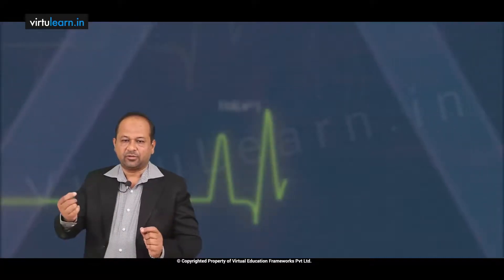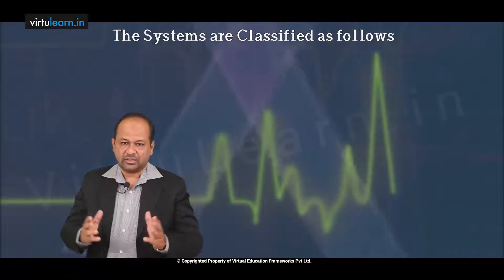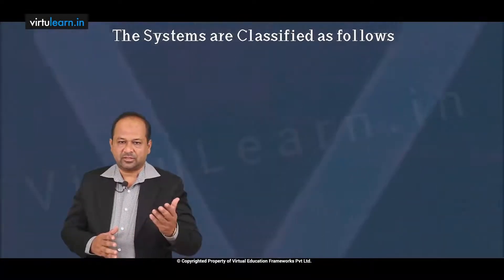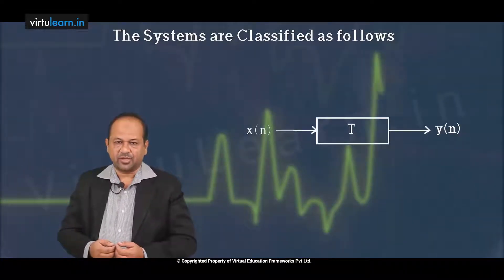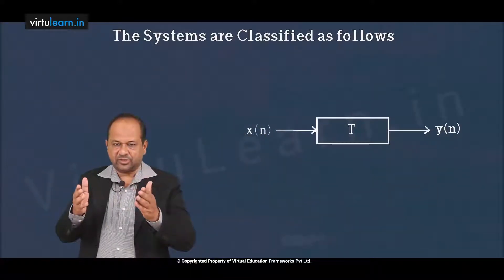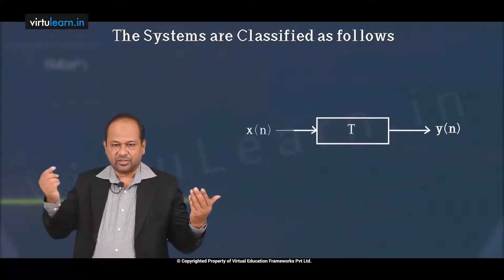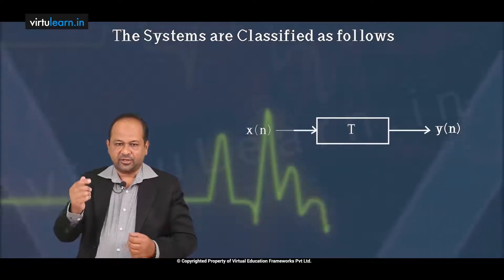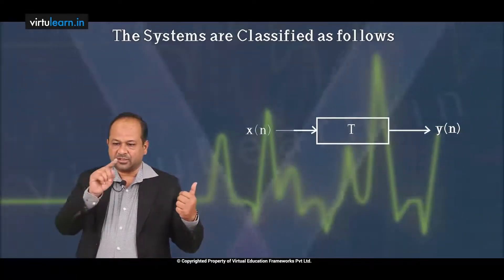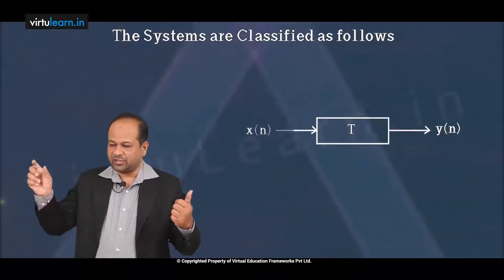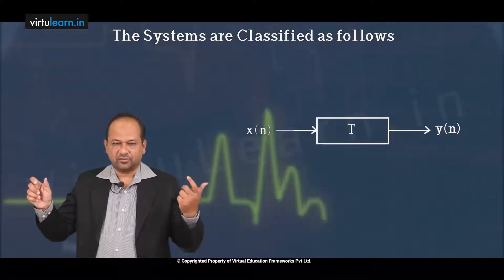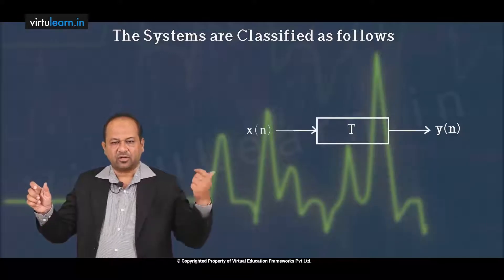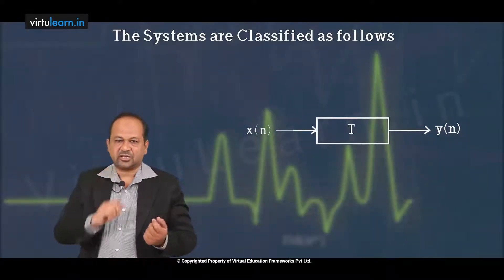After classification of signals and discrete time signals, we will move on to systems. A system is a physical entity where we give some input and it gives some output — a system which gives the desired output for the desired input. The input is x of n and the output is y of n. The system is denoted as T, where x of n is the input and y of n is the output or response. T is the transform operator.